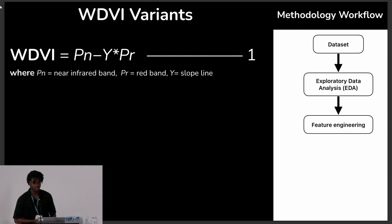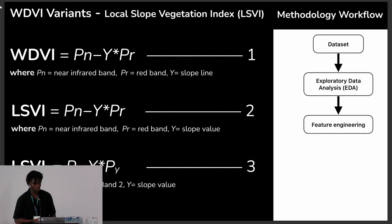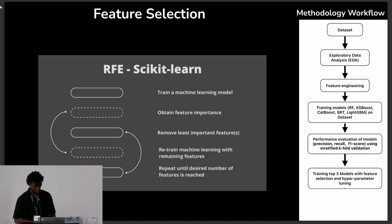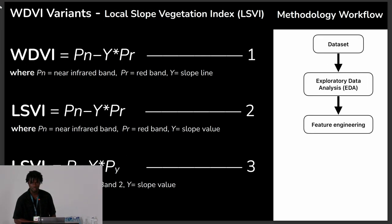The WDVI is a mathematical equation that takes the near-infrared and red bands and takes into consideration the soil line. What we did was instead of using the soil line, we used the slope value, because slope is really important when it comes to mapping soil erosion. We called this index the Local Slope Vegetation Index, because it involves the slope value. Rather than use just the red and near-infrared bands, we took the non-visible Landsat bands and interchanged them for those positions.